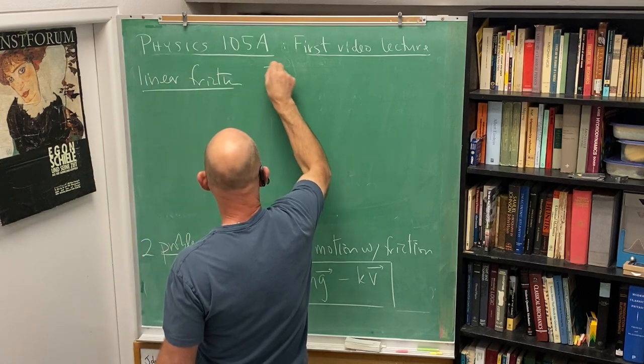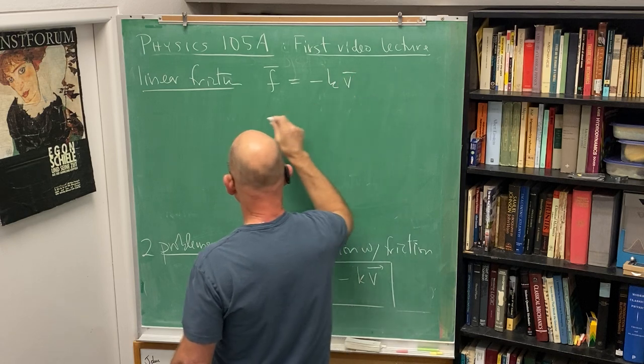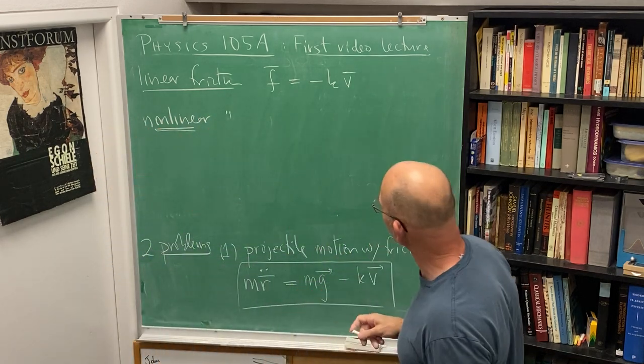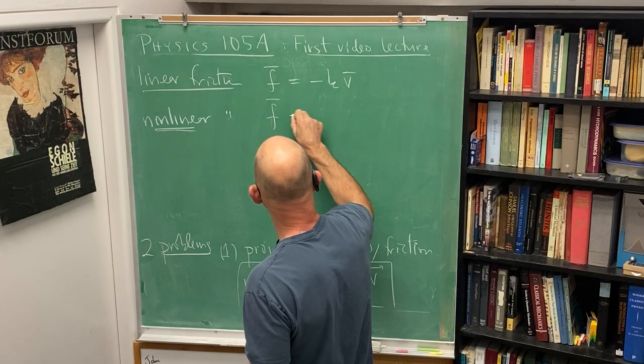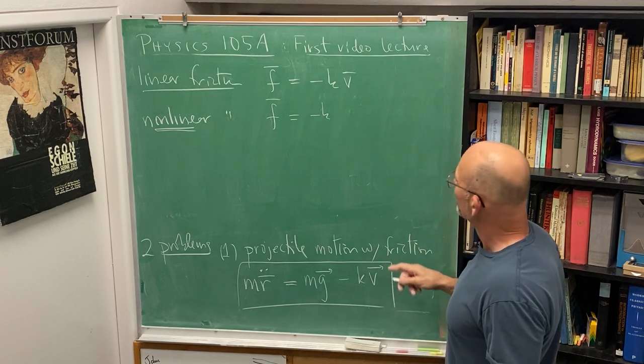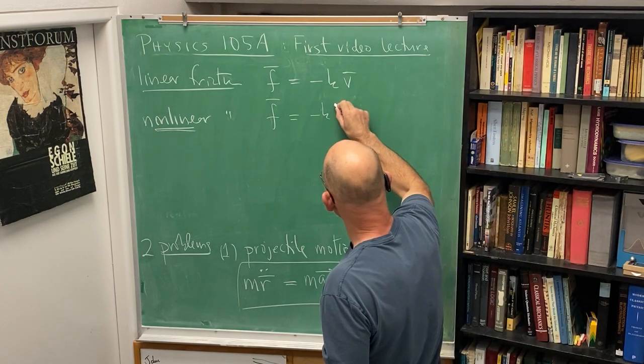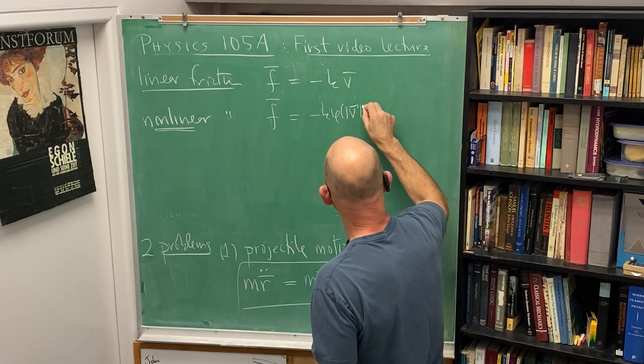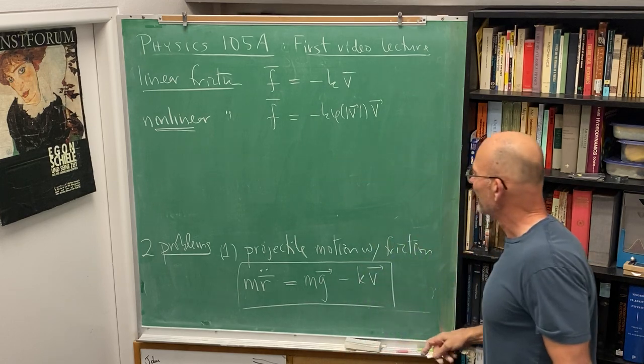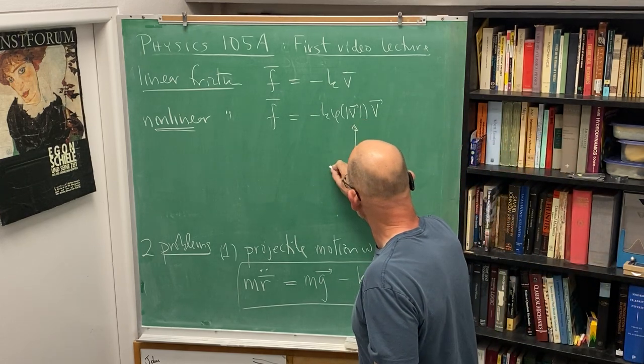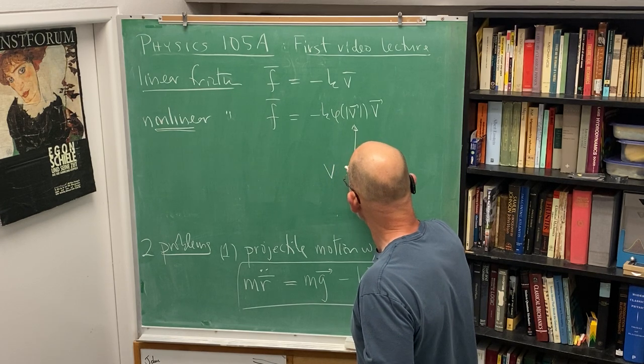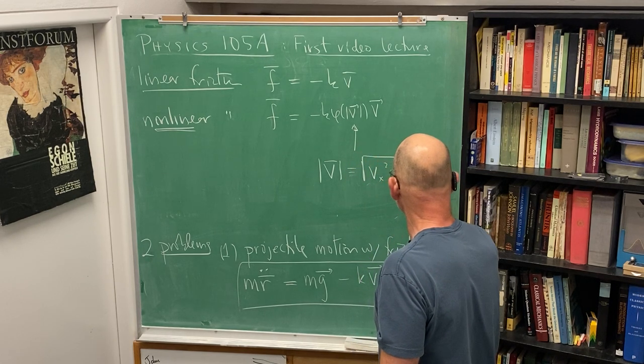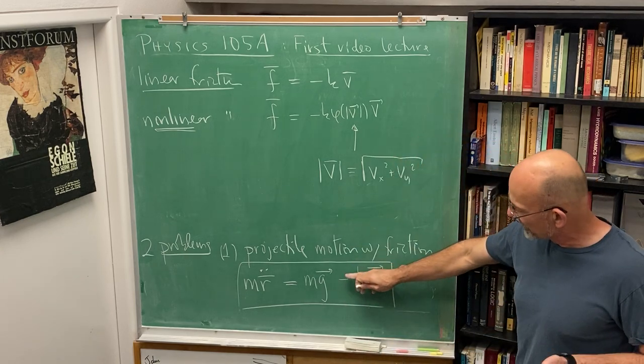Let's go ahead and take a look at this. We'd have as our force law the weight minus linear in the velocity itself, k times v. This is the linear law. Non-linear - what's the non-linear going to look like? Well, it's going to oppose the direction of motion. I'll have some k here. It's going to oppose the direction of motion but we're going to have some function phi of the magnitude of v times v. And as soon as you bring this in here, you're mixing components.